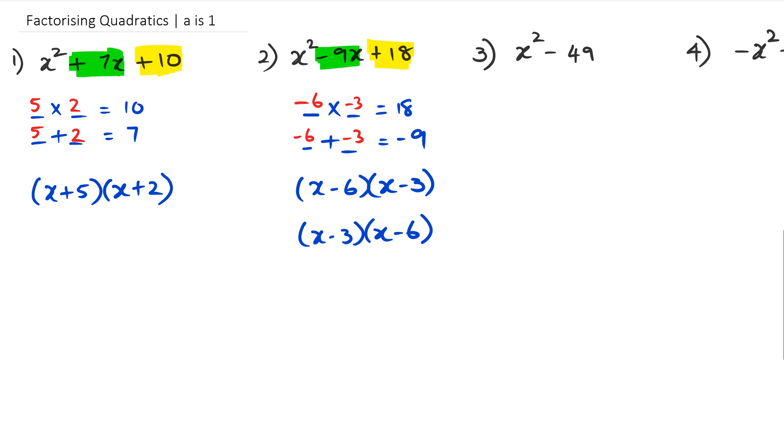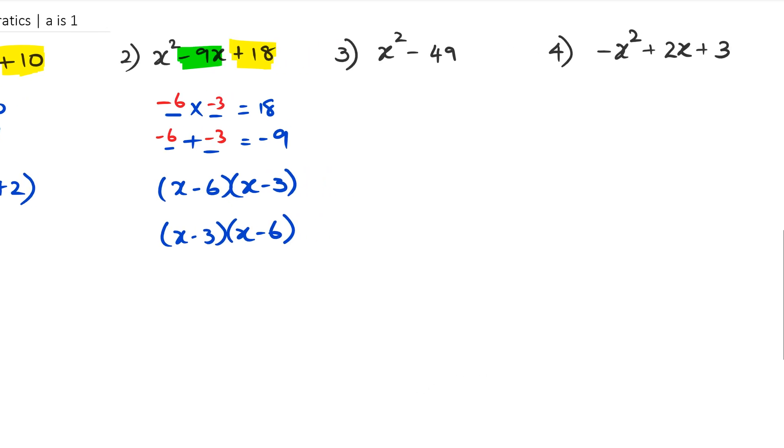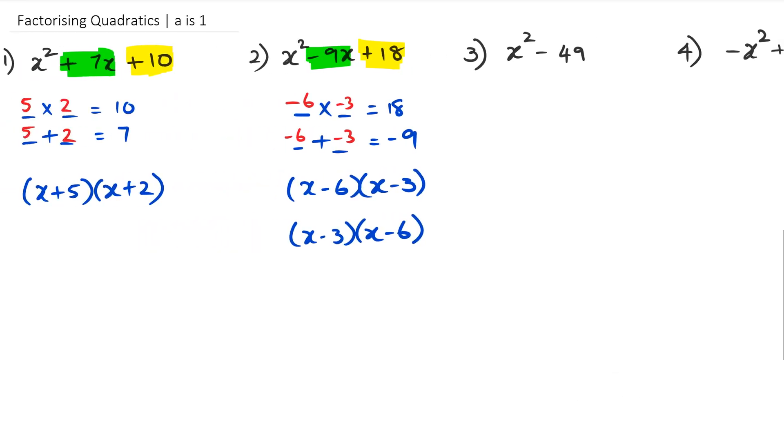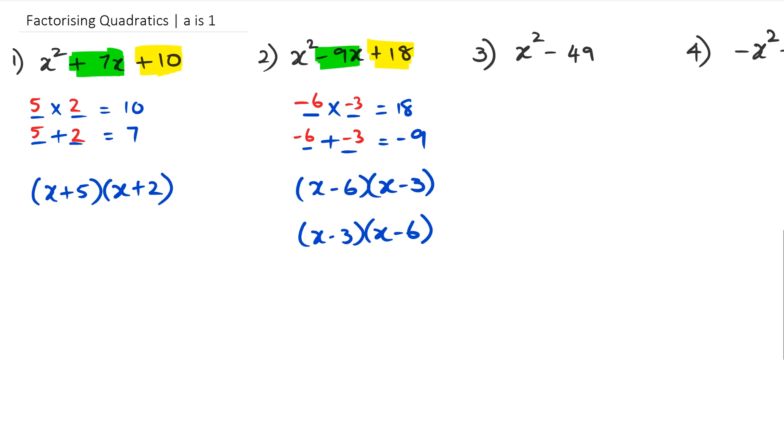That's absolutely fine as well, because with multiplication it doesn't really matter which number you write first. Like 3 times 2 is the same thing as saying 2 times 3. Let's go to question number 3. We've got x² - 49. Now this is difference of two squares, which I'm just going to go through quickly again.